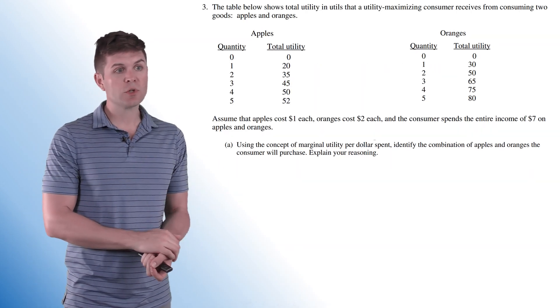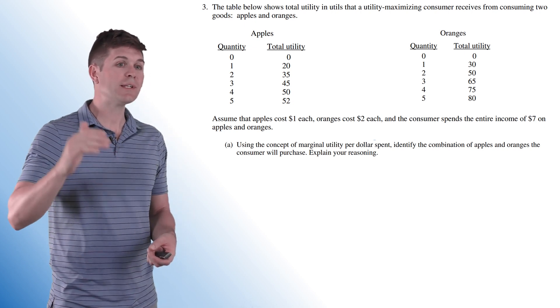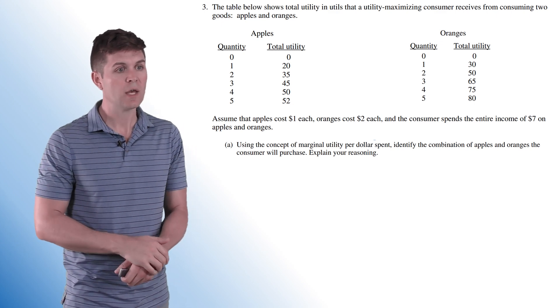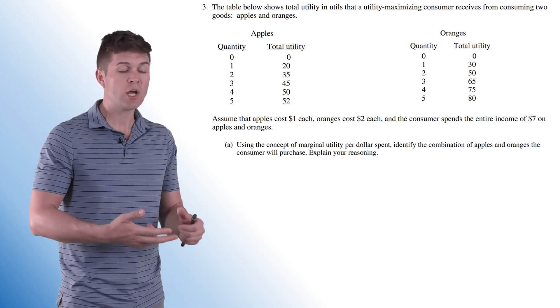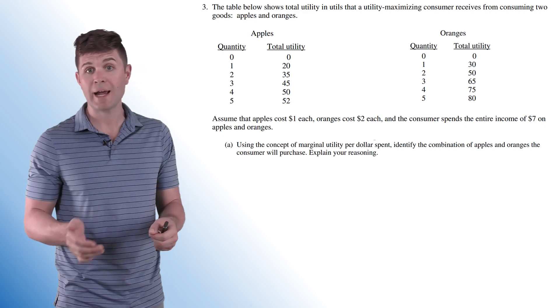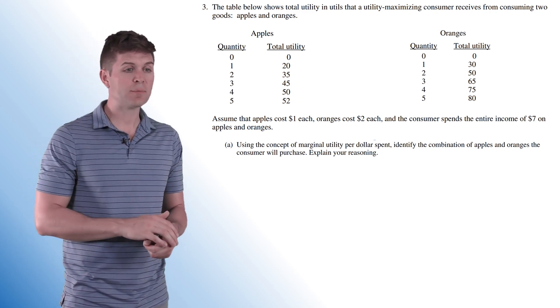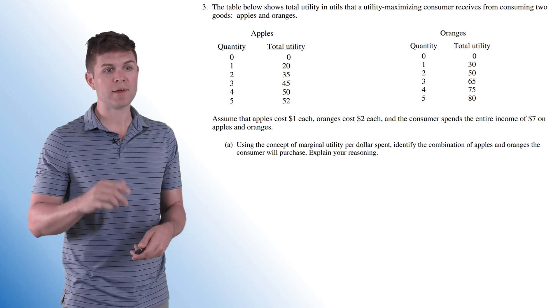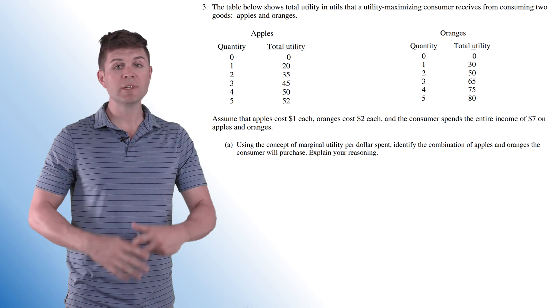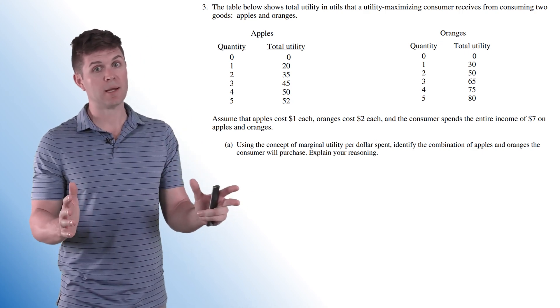The table below shows total utility in utils that a utility maximizing consumer receives from consuming two goods, apples and oranges. Assume that the apple costs a dollar each, oranges cost two dollars each, and the consumer spends the entire income of seven dollars on apples and oranges. Using the concept of marginal utility per dollar spent, identify the combination of apples and oranges the consumer will purchase. Explain your reasoning. So let's get into this, but first we've got to finish up these tables.